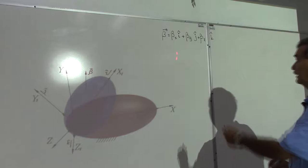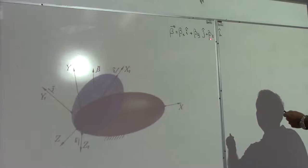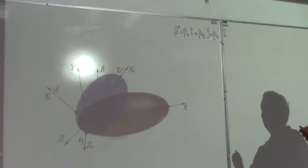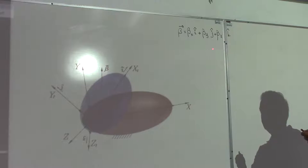One of the important things is that the components beta x, beta y, and beta z are scalar components, and the time derivatives of these scalar components are not dependent on the reference frame that we are going to use to derive.